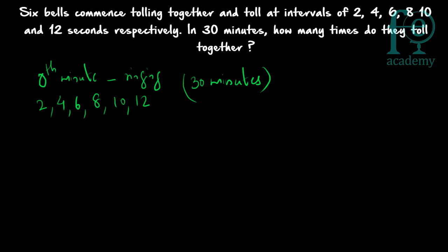In 30 minutes, how many times will these 6 bells be tolling together? All 6 bells will be ringing together at the time equal to the lowest common multiple of 2, 4, 6, 8, 10, and 12. At that particular instant, all the bells will be ringing together. So what is the LCM of 2, 4, 6, 8, 10, and 12?